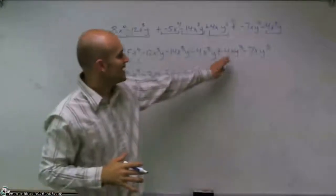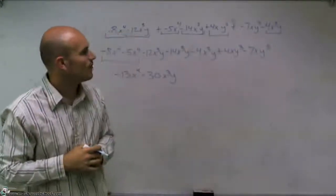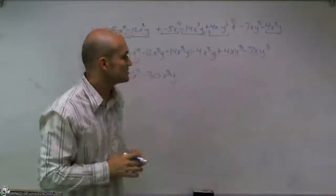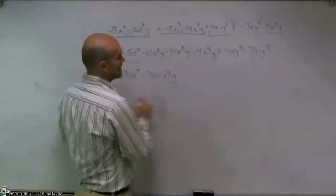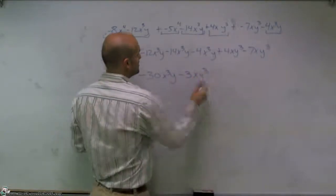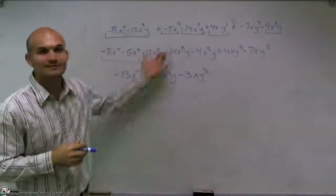And then lastly, I have my last two terms, 4xy cubed minus negative 7xy cubed. Again, since they're the same terms, I can just subtract. So I have 4 minus 7, which is going to be negative 3xy cubed. And there you go. That's how you simplify. Thanks.